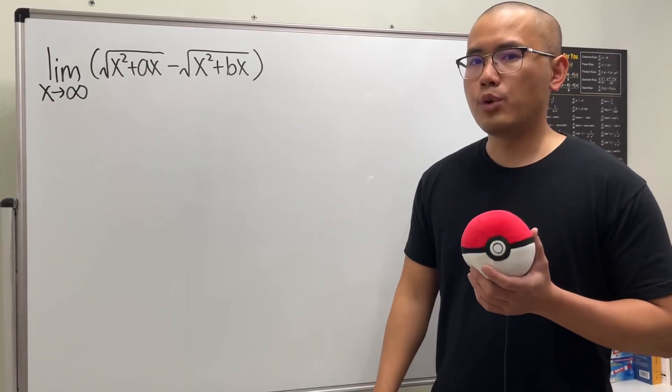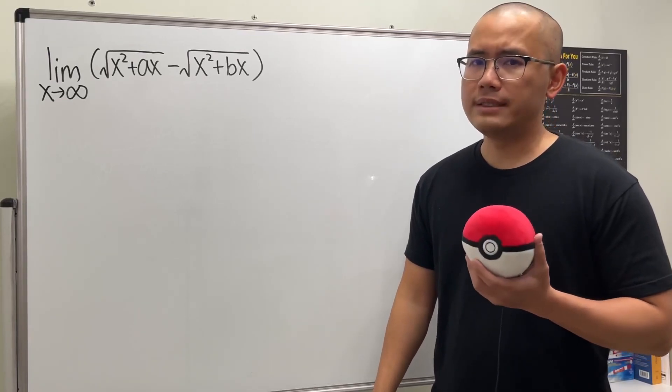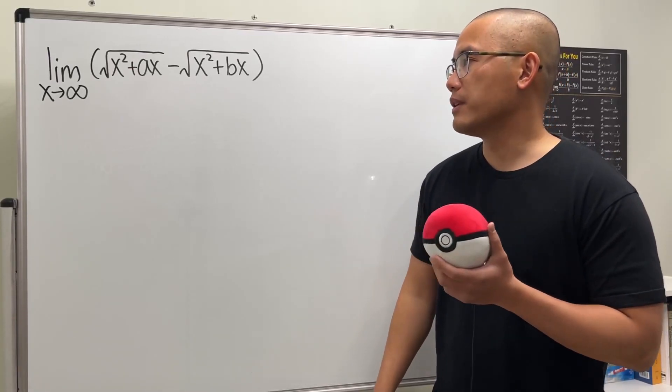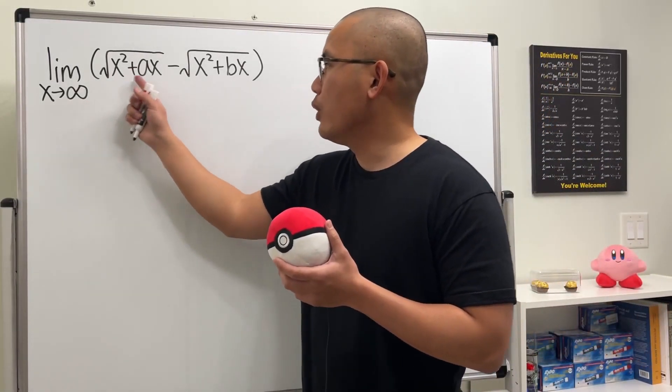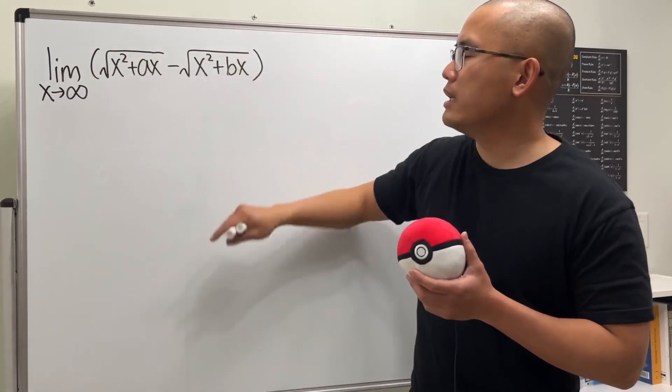Here we have a pretty classic limit question from Calculus 1, and I will tell you guys why this is tricky and why students would get this wrong. First of all, let's see when we put infinity to all the x's because x is approaching infinity. So we just care about this and care about that.